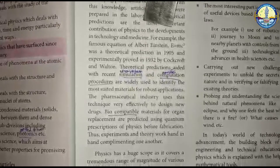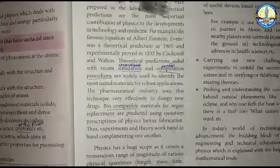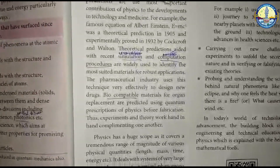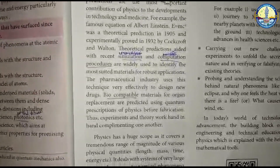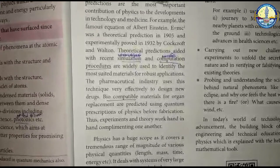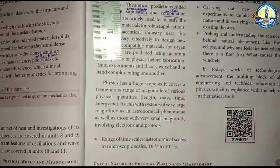Biocompatible materials are very important — materials compatible with living tissues are used for organ replacement. The quantum prescriptions of physics help us identify such materials. Both experiments and theory together drive physics forward.